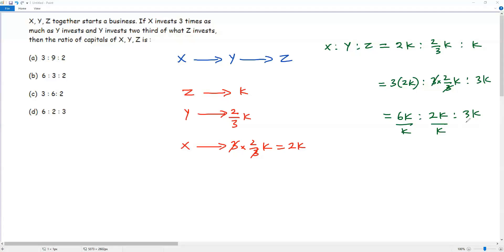So I get 6 to 2 to 3. So the ratio of capitals of X, Y and Z is 6 to 2 to 3. So the correct answer choice is option D.